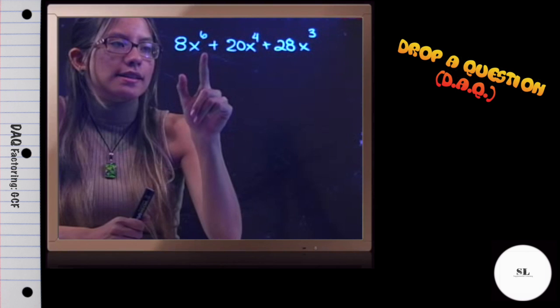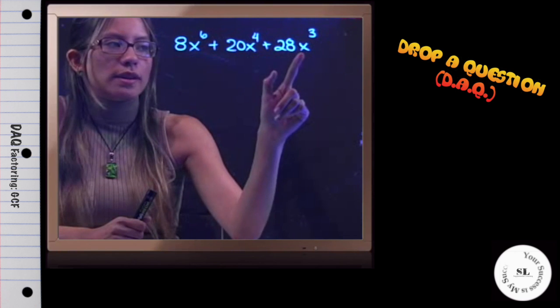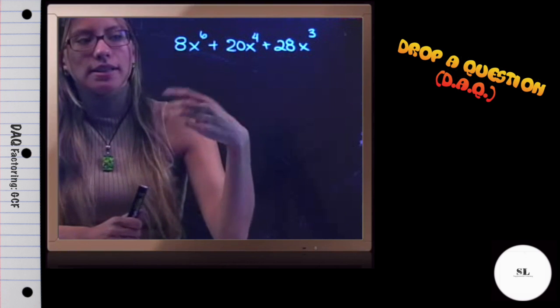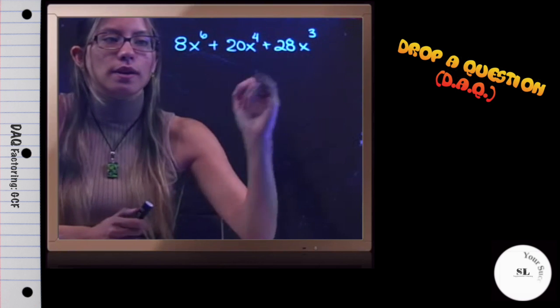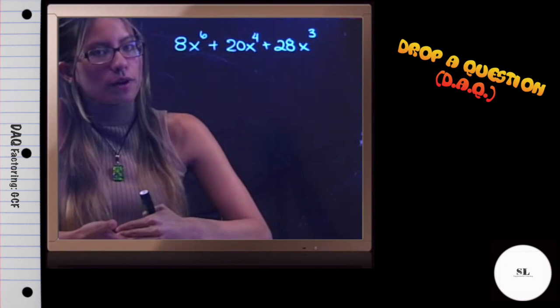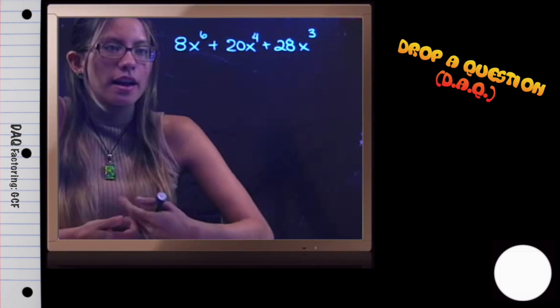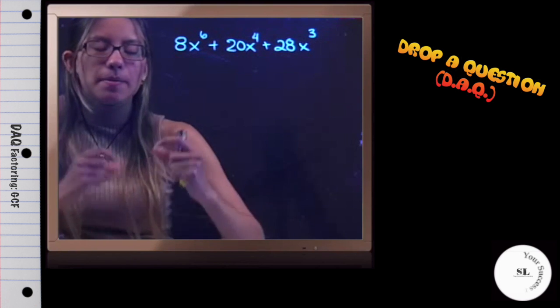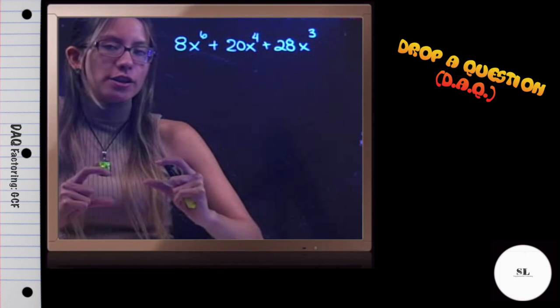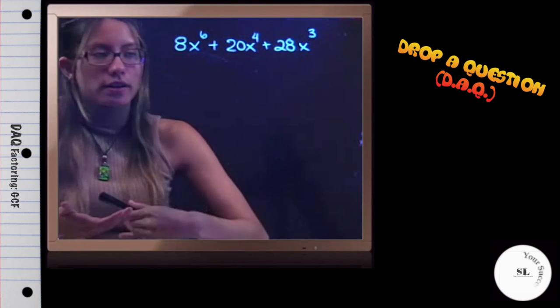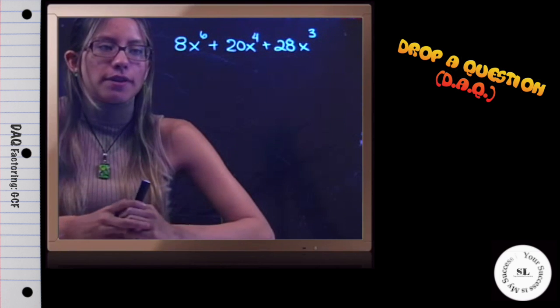So 8x^6, 20x^4, and 28x^3—they each have a coefficient and a variable. Let's look at the coefficients first: 8, 20, and 28. They're all even numbers, which means they're divisible by 2. But is there a better factor? They're actually all factorable by 4. Keep in mind that GCF means to use the greatest common factor. So 4 is greater than 2, and 4 would be a better factor to use.